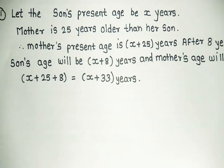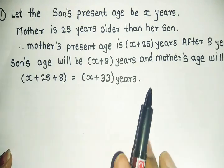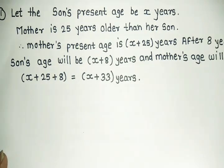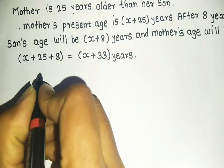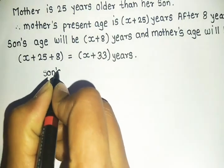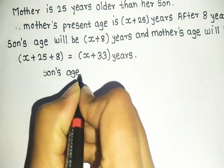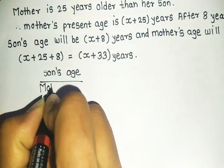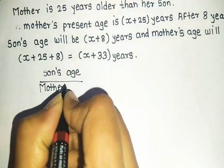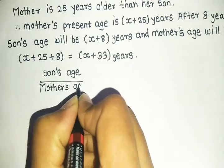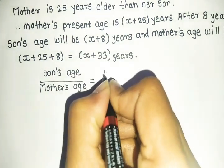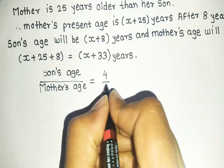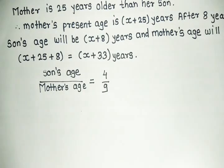Next condition, we're given the ratio. Ratio of the two ages. Son's age divided by mother's age. The ratio is 4 upon 9. This is given to us.